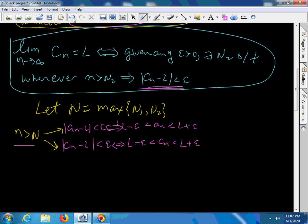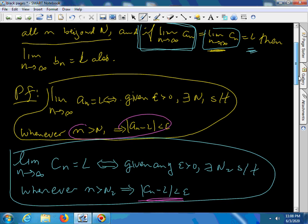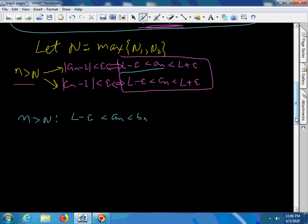But I can rewrite this statement a little bit differently, and it is still when N is bigger than N. I can say this part: L minus epsilon is less than a sub N, which is less than b sub N. We are given that, possibly it said equal, or better say equal, less than or equal to b sub n, which is less than or equal to c sub N. But c sub N is known to be less than L plus epsilon.